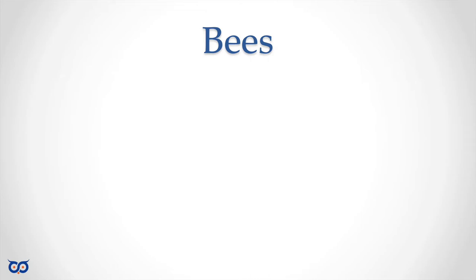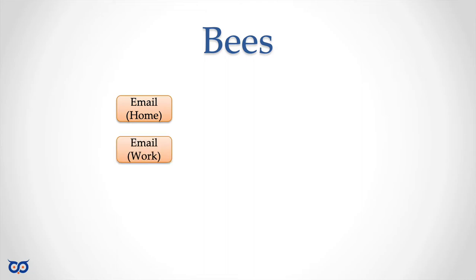Beehive takes this concept of bees. Like if you have a beehive, you have a queen bee and worker bees. What do bees do? They go and look for honey, and they have different roles within the hive. Think of a bee that can check your email — one bee for home email, another for work email. You can call them email bees, and configure each instance to check different things.